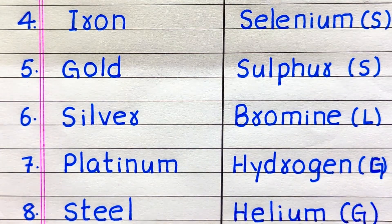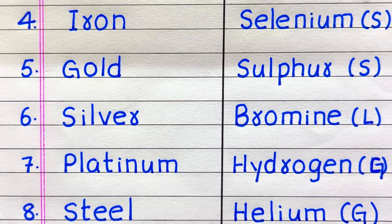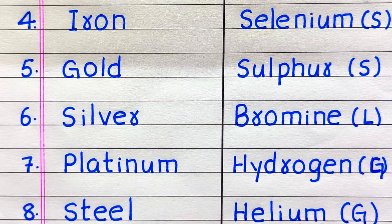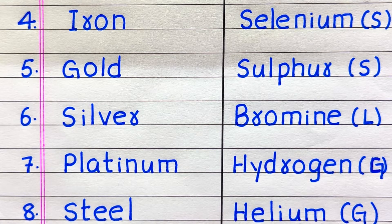The fourth example of a metal is iron. Fifth, gold. Sixth, silver. Seventh, platinum. Eighth, steel.